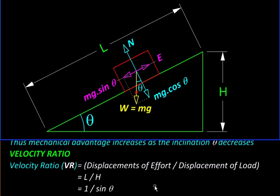Finally, the efficiency will be mechanical advantage upon velocity ratio. What we get divided by what we pay for it and this will turn out to be 1 because there is no friction.